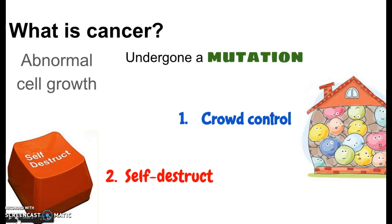The crowd control is what tells the cell that there's enough — it doesn't need to divide anymore. When another cell dies and there's an empty space, the cell knows it needs to multiply and fill that space. Cells can normally sense when they're in the right amount and when they're overcrowded. The self-destruct button comes in handy when a cell undergoes a mutation.